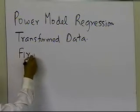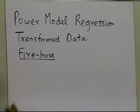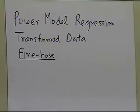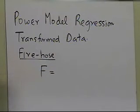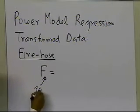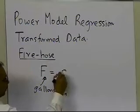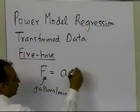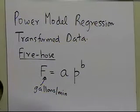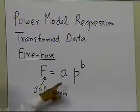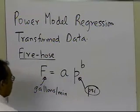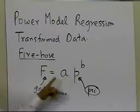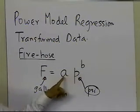The example is of a fire hose. If you have a fire hose, the relationship between the amount of water coming out is related to the pressure at which it is being dispensed. The flow rate f, in gallons per minute, is equal to a times the pressure p raised to the power b. So a and b are the constants of the power model, and p is given in psi.